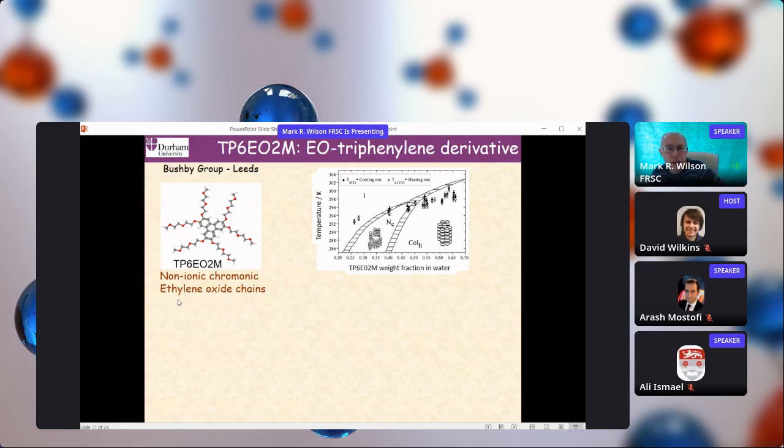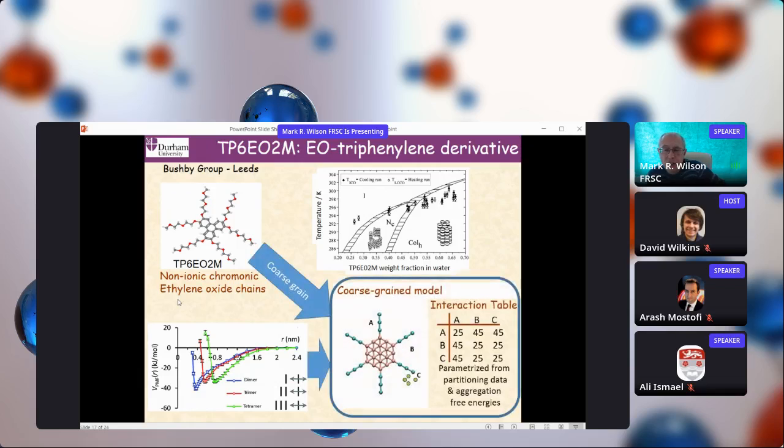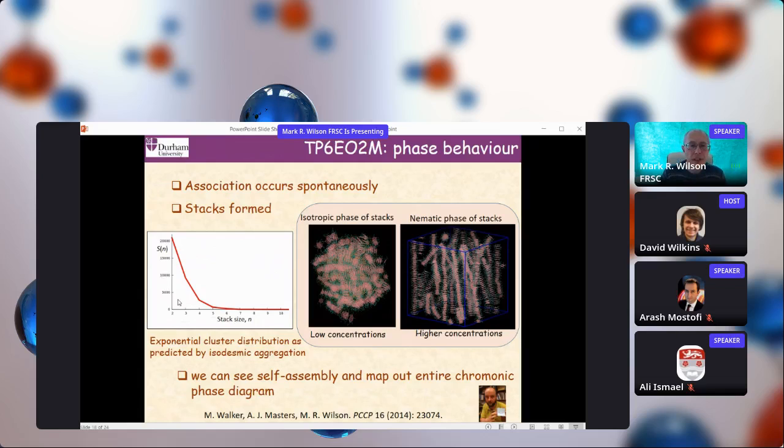Let me show you how this can be applied to chromonic systems. This is the TPEO2M non-ionic chromonic system that I showed you earlier. Here, this is the phase diagram that's seen experimentally. From the potential of mean force, which gives us our one tunable parameter for DPD along with the solubility data, we can get models which do a fantastic job of reproducing the chromonic self-assembly. This is what our DPD model looks like - a planar disk with hydrophobic parts and then hydrophilic side groups. That's the DPD interaction table there.